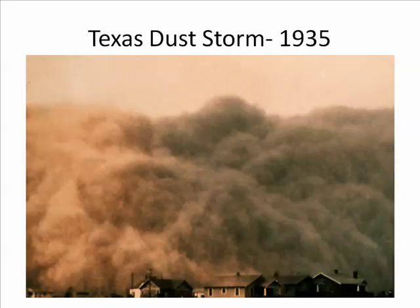This is a picture of the 1935 Dust Bowl in Texas. The Dust Bowl was a result of poor farming practices, of leaving the semi-arid land without vegetation. There was a drought, and as a result the soil dried up and farmers watched their topsoil literally blow away. It was so bad that they could go to bed at night, wake up in the morning, and see an outline of themselves on their bed because so much dust had settled during the night.